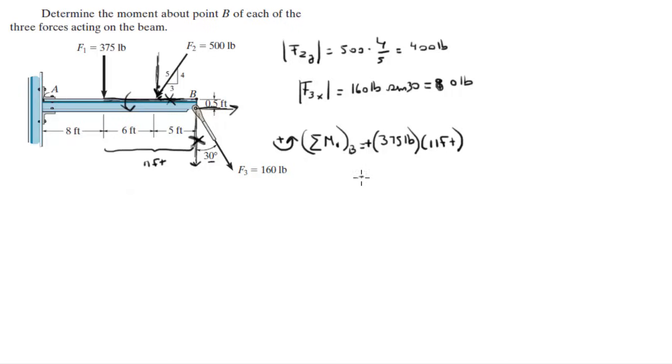And that comes out to be 4,125 foot pounds positive, or 4.125 kilopounds per foot counterclockwise because it's positive.